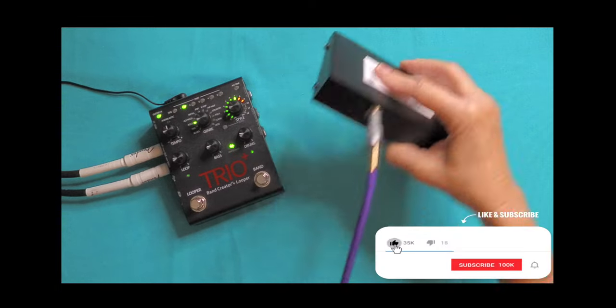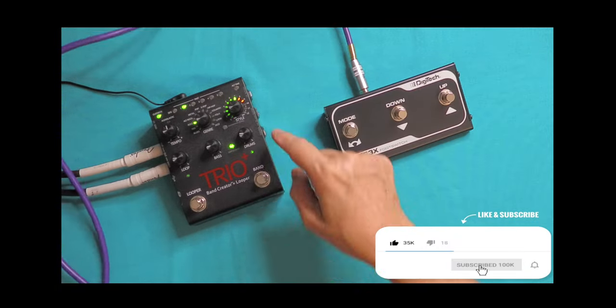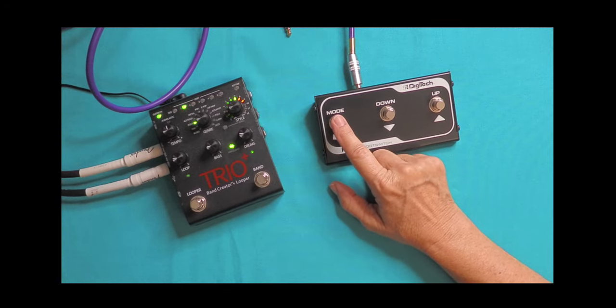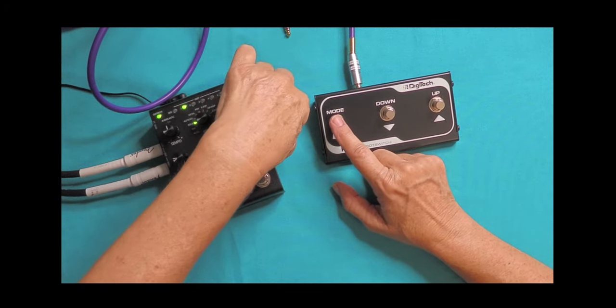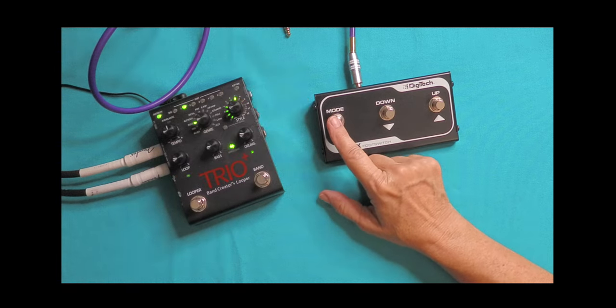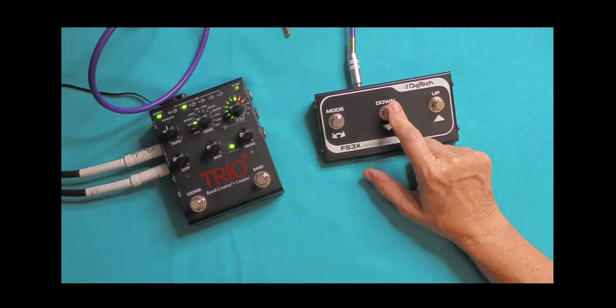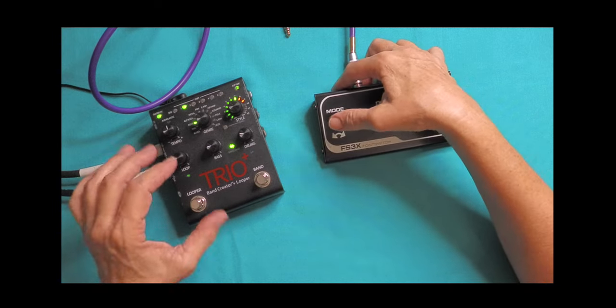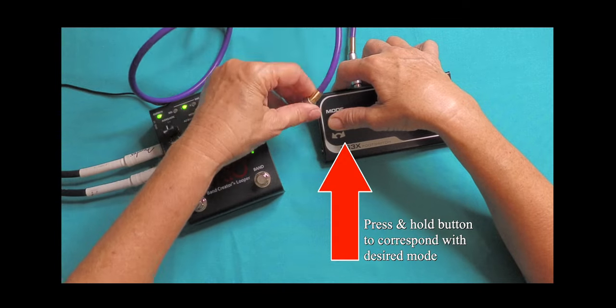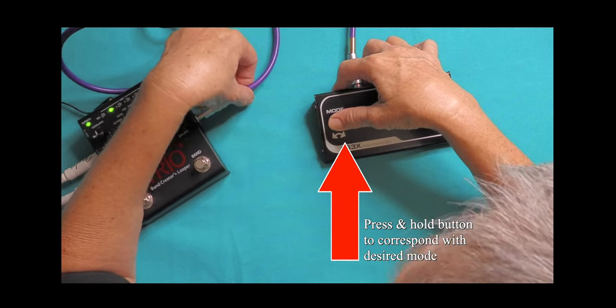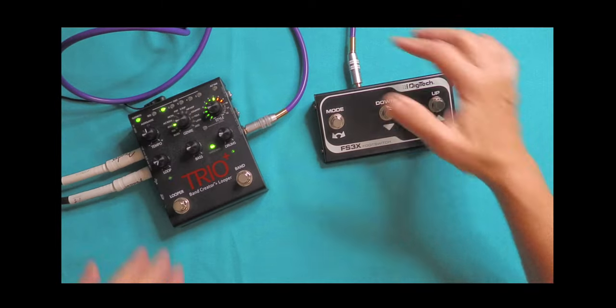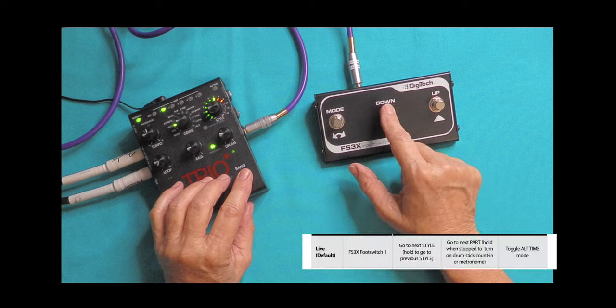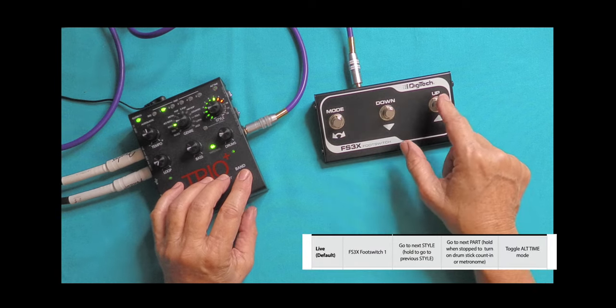We're going to go ahead and plug in this end here, and before you plug in the other end, you're going to want to press and hold while you're plugging this into your unit. It's going to tell you which mode you're going to be using. This is going to be live, this is going to be for the tabletop, and this is going to be for the live mixer. So let me go ahead and we're going to set the default mode right now. We should be able to use this to go to the next style, this to go to the next part, and this to toggle alt time.